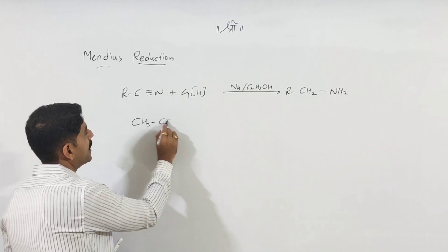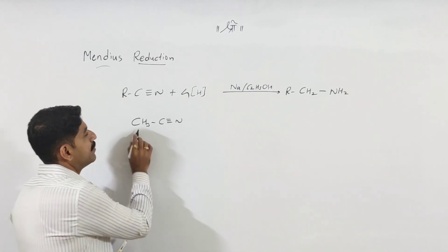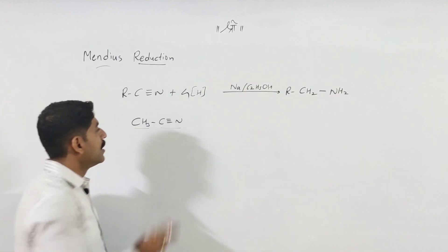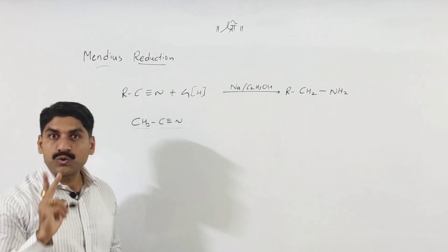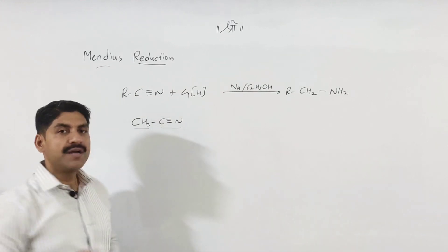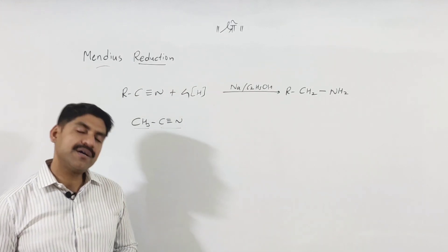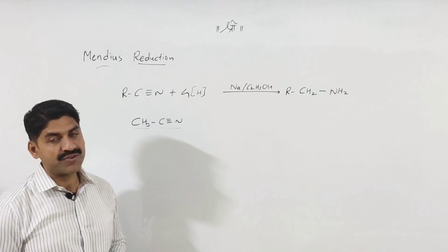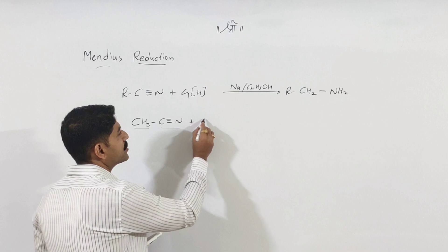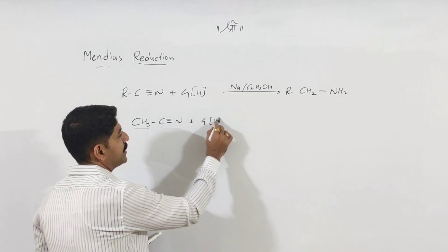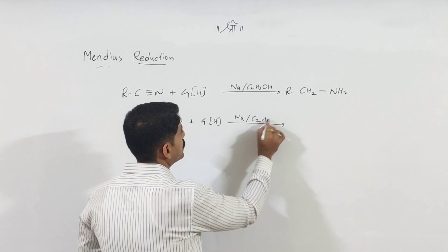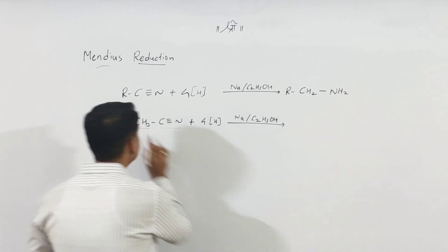CH3CN — methyl cyanide, also called acetonitrile, and the IUPAC name is ethanenitrile. The reagents are 4H, sodium and C2H5OH (ethanol).